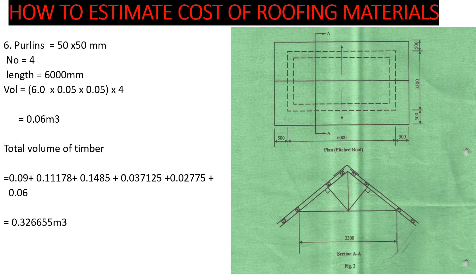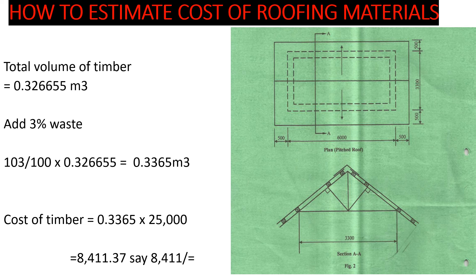The total volume of timber — wall plate, rafters, tie beams, struts, king posts, and purlins — is 0.3226655 cubic meters. We then add 3% waste, giving us 0.3365 cubic meters. The cost of timber is 0.3365 × 25,000 = 8,411.37 shillings, so approximately 8,411. That is how we calculate the cost of the timber. I'll upload the iron sheet video so we can add both costs and find the total cost of the roofing materials. Thank you guys for your time — until next time, bye bye.